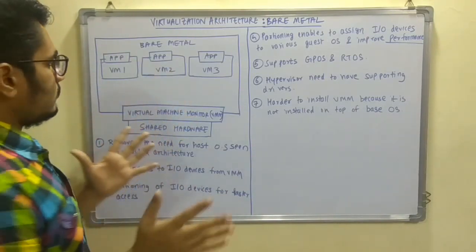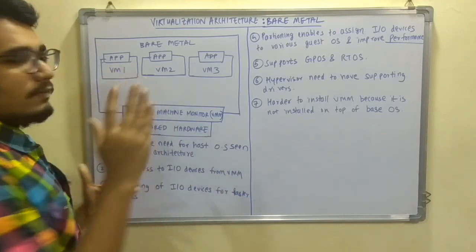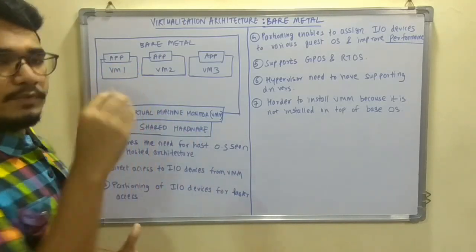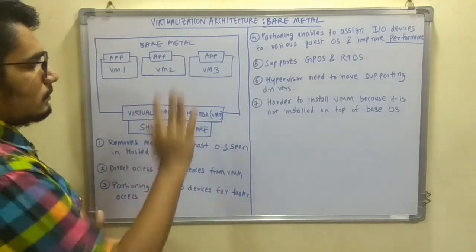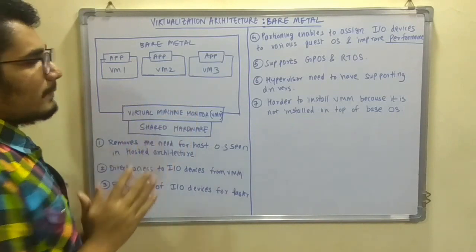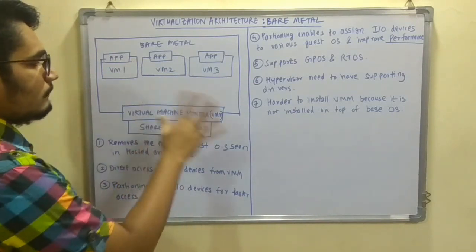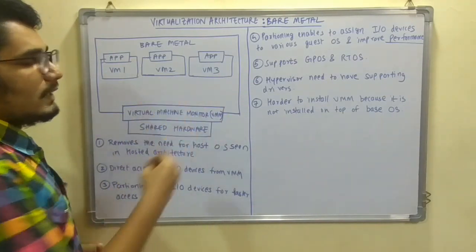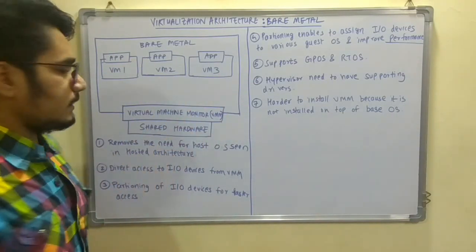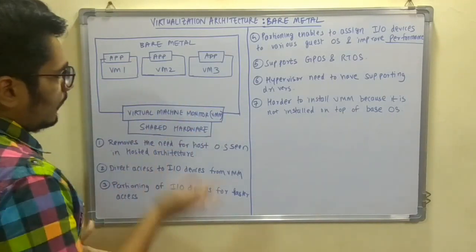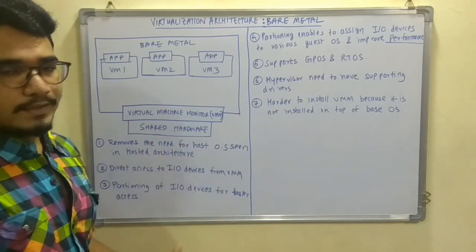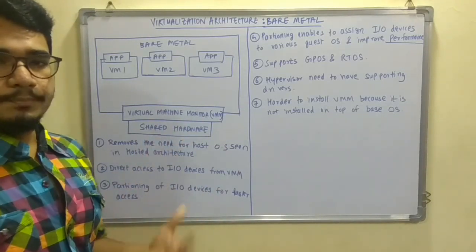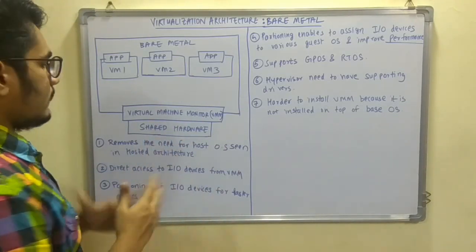The rest remains the same — you have virtual machine 1, virtual machine 2, virtual machine 3, and likewise. This is the bare metal setup: you have the VMM, the virtual machine monitor, to directly handle the interrupts and calls, and you have the shared hardware which has IO devices, CPU, memory, etc.